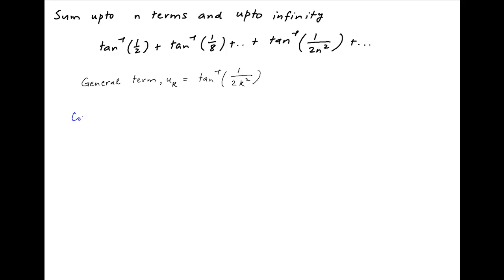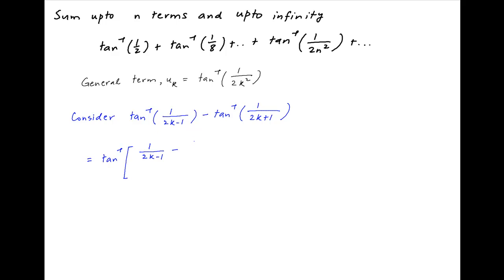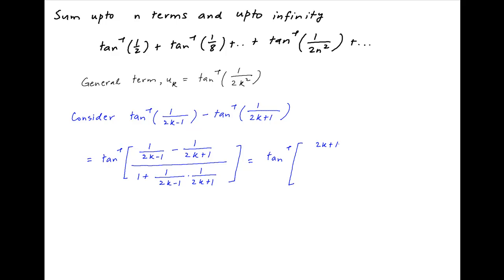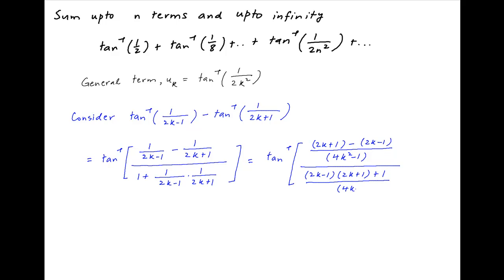Now consider the expression tan inverse 1 upon 2k minus 1 minus tan inverse 1 upon 2k plus 1. This is equal to tan inverse of the quantity: 1 upon 2k minus 1 minus 1 upon 2k plus 1, divided by 1 plus 1 upon 2k minus 1 times 1 upon 2k plus 1. This simplifies to tan inverse of 2k plus 1 minus 2k minus 1 divided by 2k minus 1 times 2k plus 1, which is 4k square minus 1, divided by 2k minus 1 times 2k plus 1 plus 1 divided by 4k square minus 1.